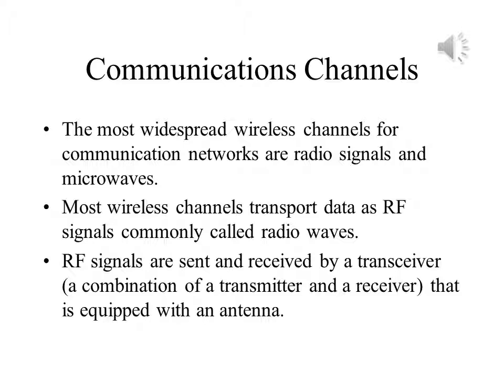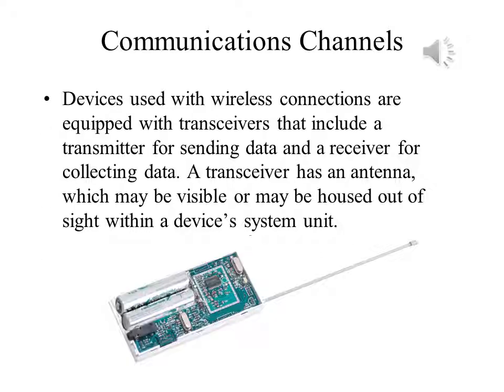Both RF and microwave transmissions require antennas, but a microwave antenna is usually a dish. Computers and other devices that share wireless connections need a transceiver, which has a transmitter to send data and a receiver for collecting data. The transceiver must have an antenna in order to send and receive. The antenna may be visible, or it might be inside the device's system unit, where it is protected and out of sight.